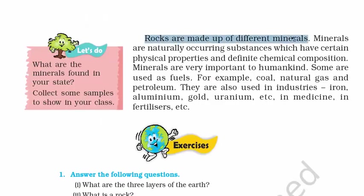Rocks are made up of different minerals. Minerals are naturally occurring substances which have certain physical properties and a definite chemical composition. Minerals are very important to humankind — some are used as fuels, for example coal, natural gas, and petroleum. They are also used in industries, such as iron, aluminum, gold, and uranium. With this, we have come to the end of Chapter 2 of Class 7 NCERT.